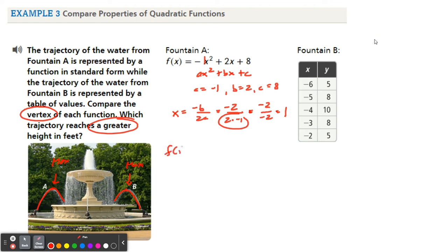So plug that in. So we have negative 1 squared, notice the parentheses, plus 2 times 1 plus 8. Type this into Desmos, don't forget that minus sign. Minus 1 plus 2 plus 8, that's going to be 9. So fountain A, this is all fountain A, has a max height of 9.